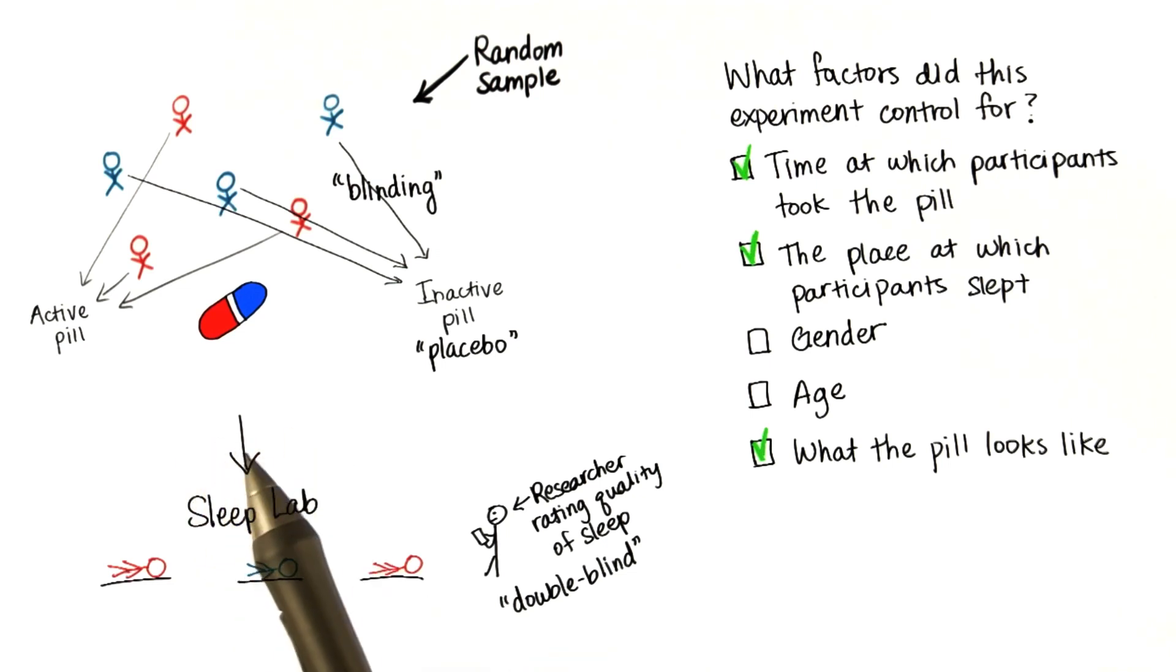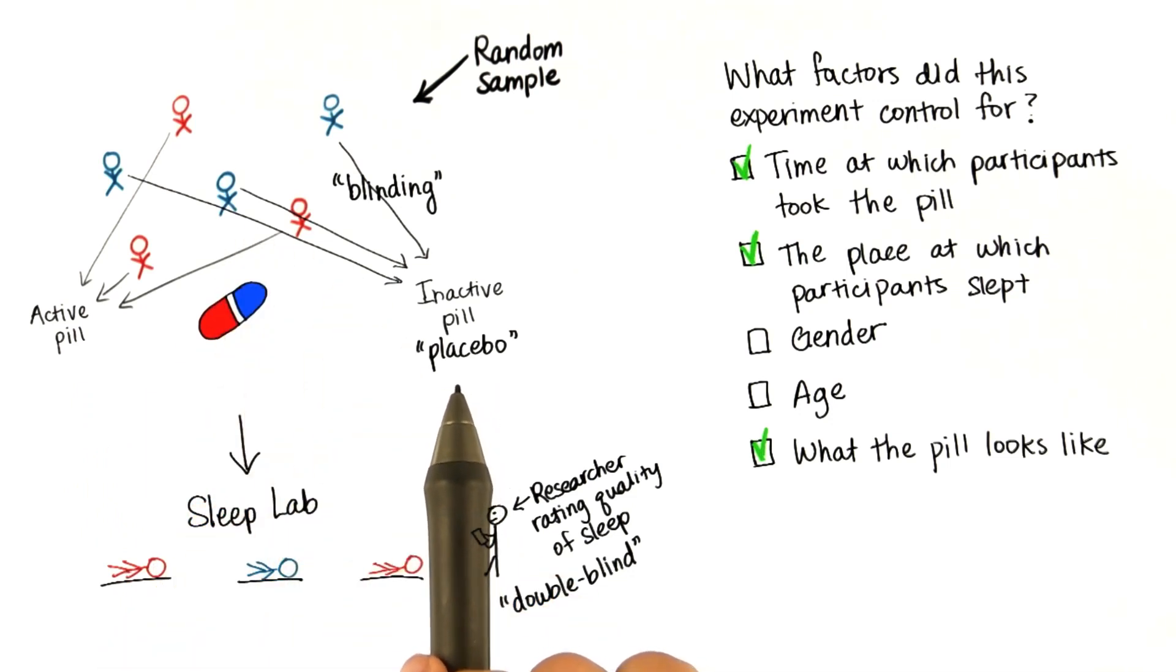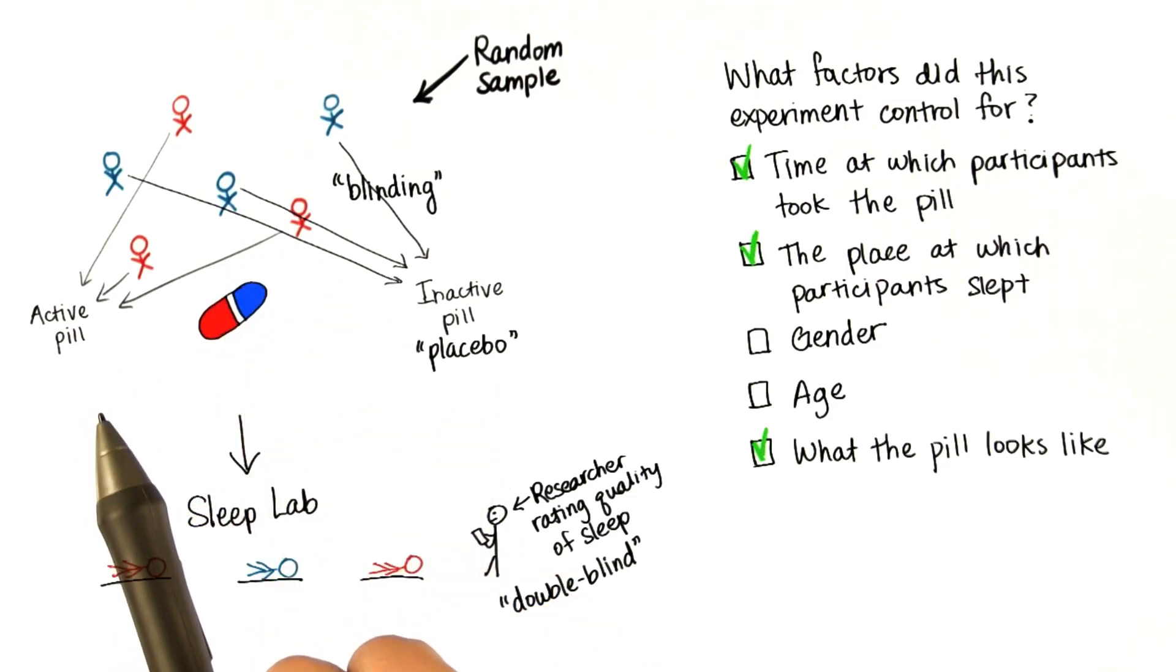Let me elaborate on this a little bit. Let's say that only females were assigned to the active pill and only males were assigned to the inactive pill. Then, if people who took the active pill slept better, we wouldn't know if it was due to the medication in the pill, or maybe women just sleep better than men.